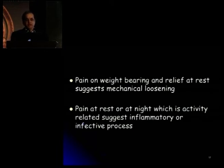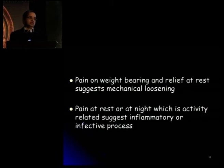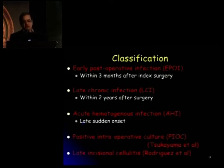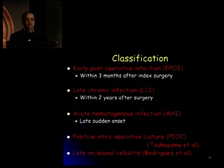In general, pain on weight bearing and relief at rest usually suggests mechanical loosening of the prosthesis, whereas pain at rest or at night, which is activity-related, usually suggests either an inflammatory or infective process. The typical classification describes: first, early postoperative infection within the first three months after index surgery; second, late chronic infections within the first two years or even later after surgery; and third, acute hematogenous infection, which is sudden or late onset — these patients usually throw a septic embolus from somewhere else and present with an acute hematogenous infection.